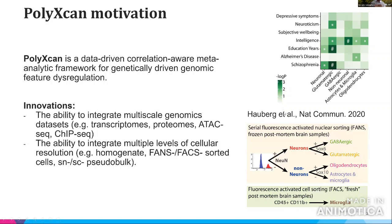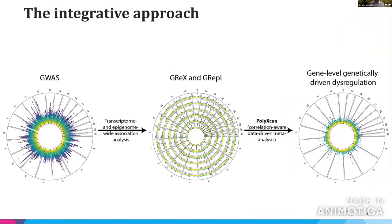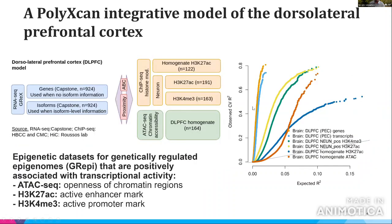The main innovations are the ability to integrate multiscale genomic datasets — transcriptomes, proteomes, chromatin accessibility, and any other genomic feature — and the ability to integrate multiple levels of cellular resolution, for example homogenate, FACS-sorted cells, or single-nucleus pseudo-bulk. The high-level approach: starting with a GWAS, we use our models to take genetically-regulated gene expression, epigenomes, or proteomes, and derive a single gene score for genetically-driven dysregulation.